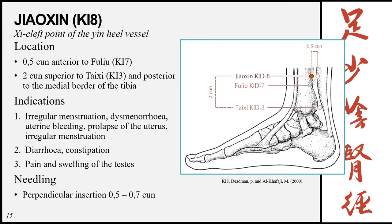Jiaoxin, Kidney 8, is the Xi Cleft point of the Yin Heel Vessel, located 0.5 cun anterior to Fuliu (Kidney 7), 2 cun superior to Taixi (Kidney 3), and posterior to the medial border of the tibia. This differs from Kidney 7, which is anterior to the Achilles tendon. Indications: irregular menstruation, dysmenorrhea, uterine bleeding, prolapse of the uterus, diarrhea or constipation, and pain and swelling of the testes. Needling: perpendicular 0.5 to 0.7 cun.